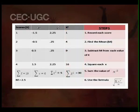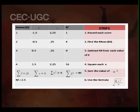The steps to calculate standard deviation are: first, record each score; second, find the mean; third, subtract the mean from each value of X; fourth, square each deviation score; fifth, find the sum of x-squared values; sixth, use the formula — the square root of the sum total of x-squared divided by n.